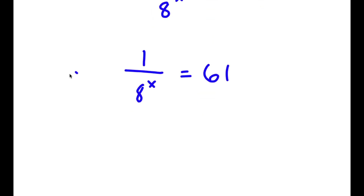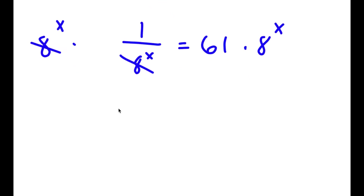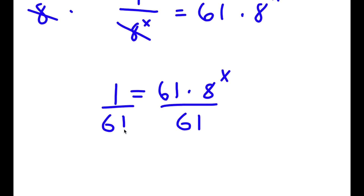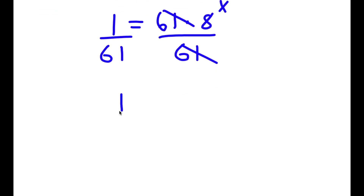Now I'm going to multiply both sides by 8 to the power of x. These two cancel out, and now I have 1 is equal to 61 times 8 to the power of x. Now I'm going to divide both sides by 61, and now I have 1 over 61 is equal to 8 to the power of x.